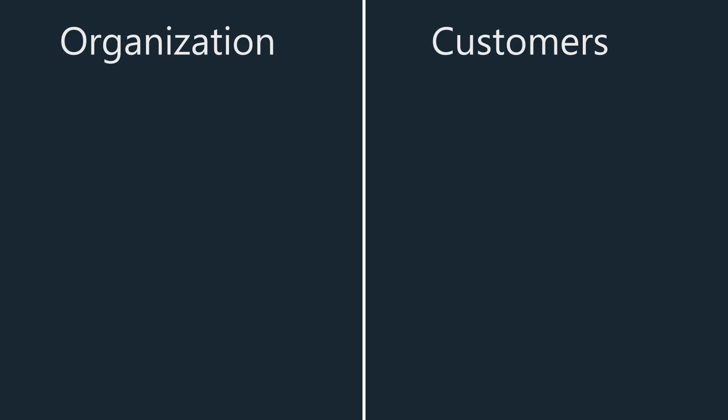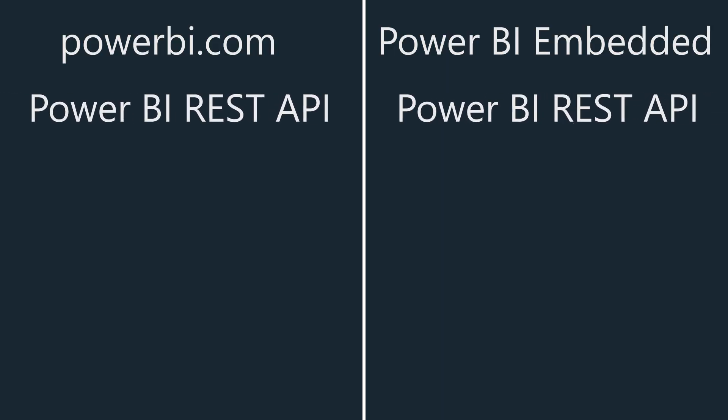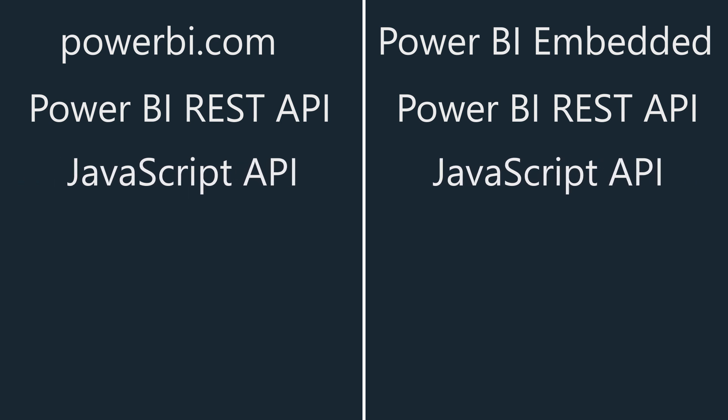We've got embedding for your organization — I'm going to label that as Power BI.com — and embedding for your customers — I'm going to label that as Power BI Embedded. I'm going to go through the steps used to embed content for each of these items and compare the two. From an API perspective, both use the same REST APIs, and both use the same JavaScript SDK for interacting with the embedded report. There's no difference between the two.